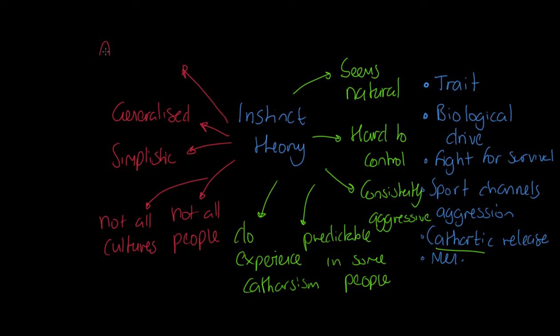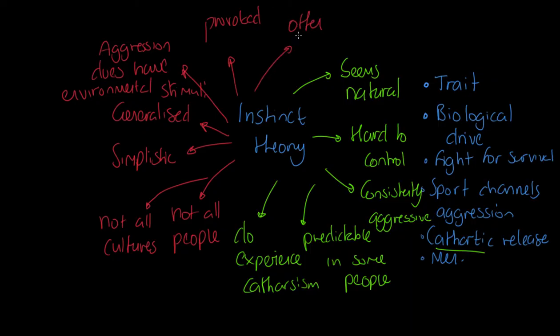Aggression does have environmental stimuli. There are times where the actual environment triggers aggression, therefore we could argue it's not always natural. Aggression is often provoked. It comes from an environmental stimulus. It's also often copied, so it may well be that an aggressive role model is copied. Therefore, that would lead more towards social learning. Also, people are capable to unlearn aggression, which often comes with age and experience.